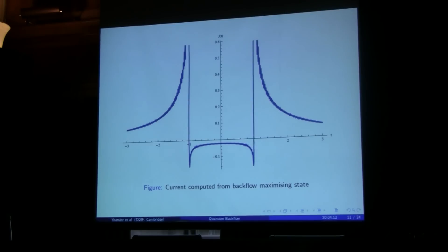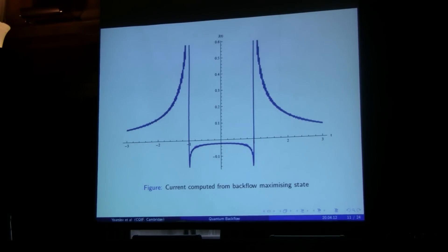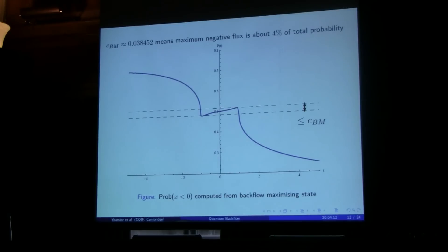Here is a plot of the current obtained from the maximum backflow state. This looks a lot more striking than the Gaussian example — here is my current as a function of time. It disappears up to some asymptotes, and then there's a huge region of negative current between minus one and one. It's symmetric, because in this eigenvalue problem you can choose the eigenfunctions to be real. Here is a nice plot displaying the probability of being in x less than zero as a function of time — it decays, increases a bit, and then disappears off. The maximum amount by which it can increase is exactly the Bracken-Malloy constant.